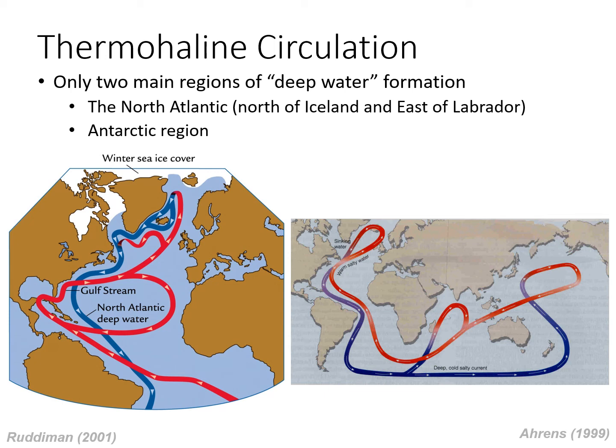Thermohaline circulation was introduced in the video you just watched. It is a large-scale current that operates a bit like a conveyor belt, moving water and energy around the globe. The main driver of this conveyor belt is density differences in ocean waters caused by variations in salinity and temperature. The transfer of energy by the conveyor belt has profound impacts on climate. For example, Northern Europe is much warmer than locations of similar latitudes in Canada, as a result of energy transferred from the Gulf of Mexico to Europe by the conveyor belt.